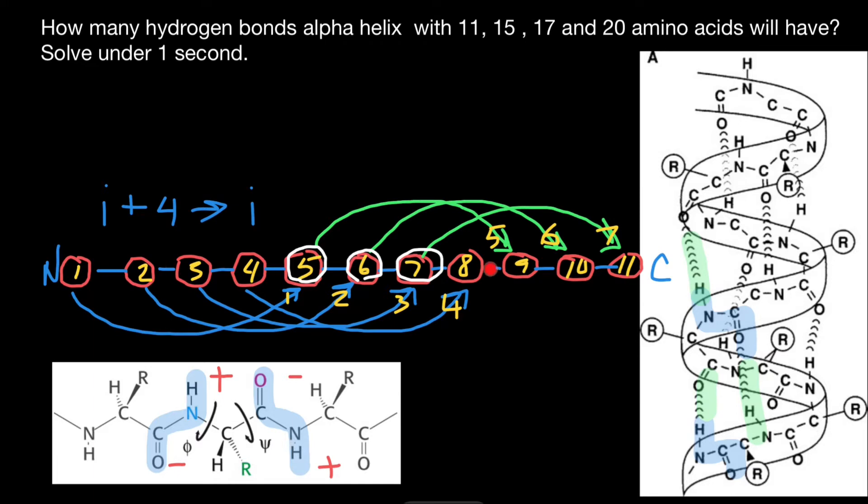So here's an 11-residue alpha helix, which we stretch. And here are 11 amino acids. Basically, per one amino acid, here's the alpha carbon, R group here, amino group here which is slightly positively charged, and carboxylic group here which is slightly negatively charged.